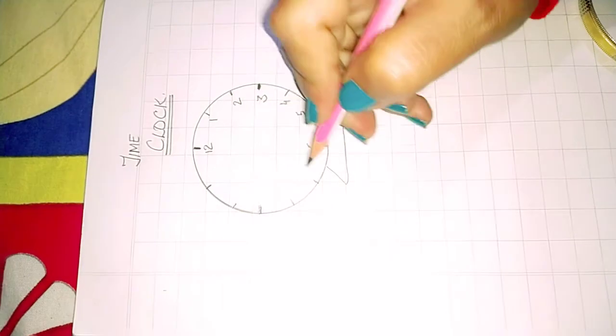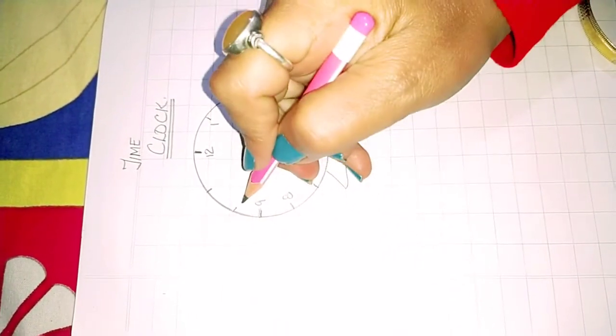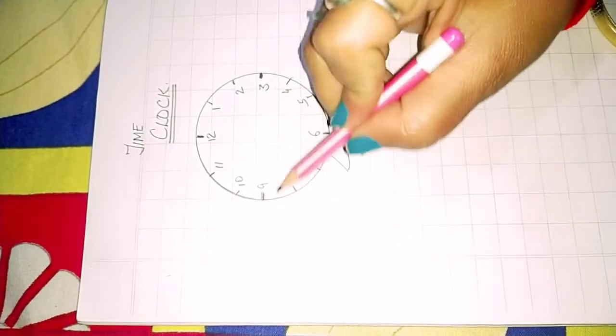6 and 12 have to be opposite. 7, 8, 9, 10, and 11. 3 and 9 are opposite.